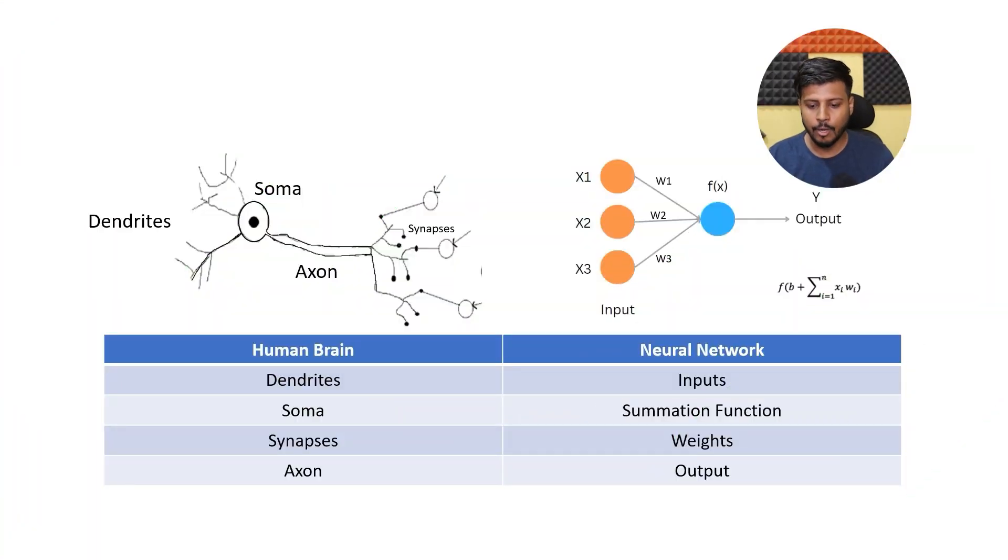Now, let's have a closer look at different components of human brain and Neural Network side by side. One of the key components of the brain is the Neurons, which are responsible for receiving sensory input from the external world, for sending motor commands to your muscles, and for transforming and relaying the electric signals at every step. Within neurons, we have dendrites, which are like branches that receive signals from other neurons.